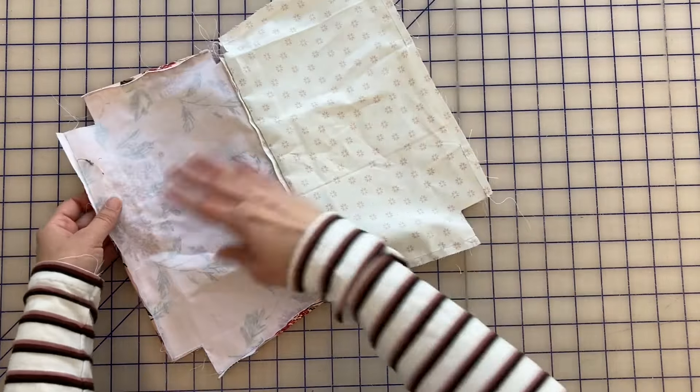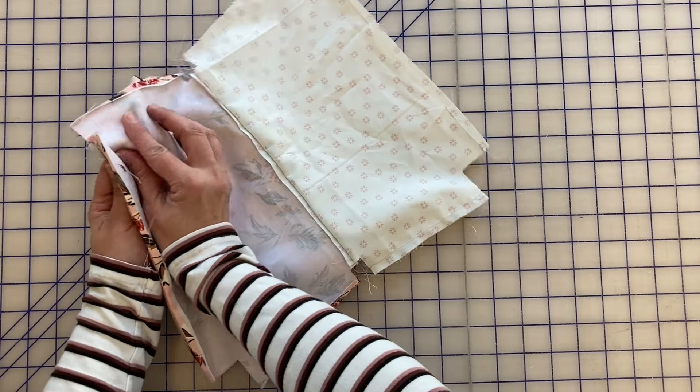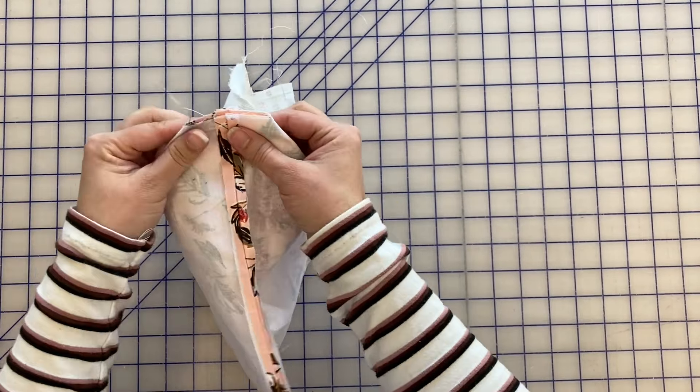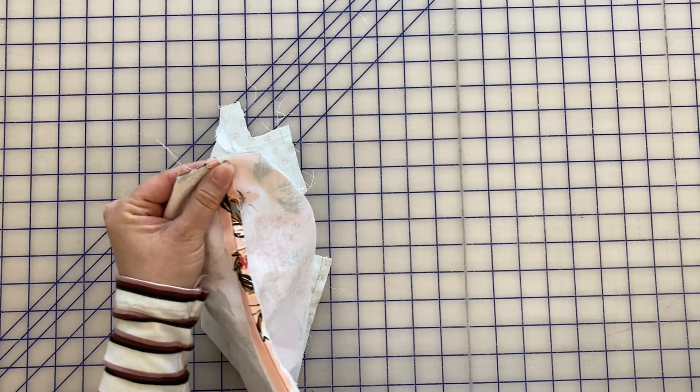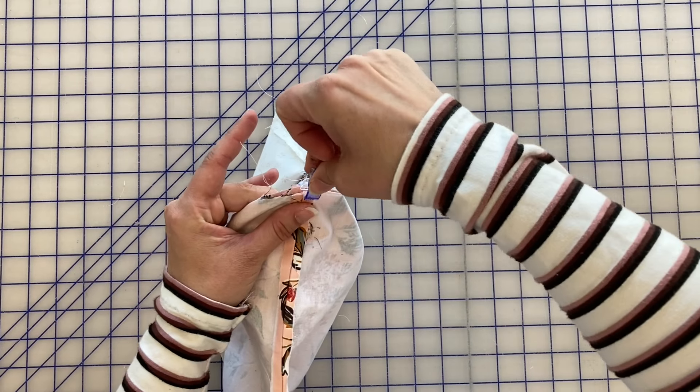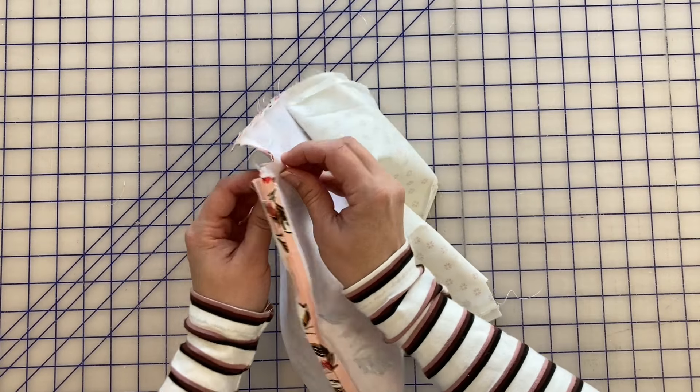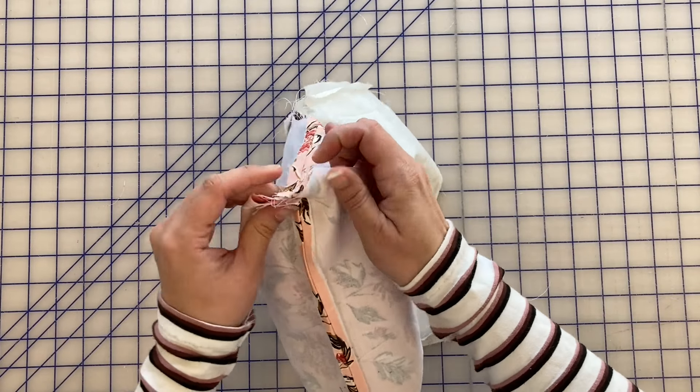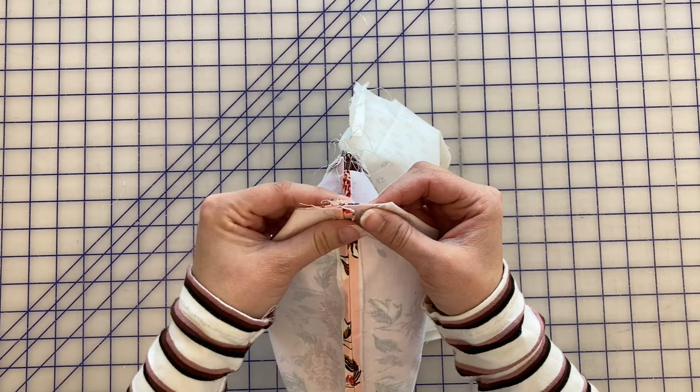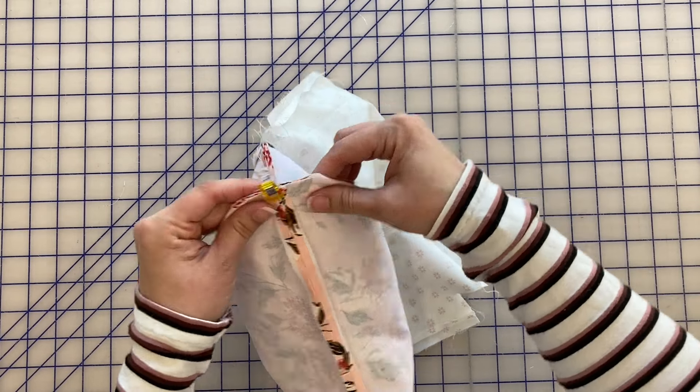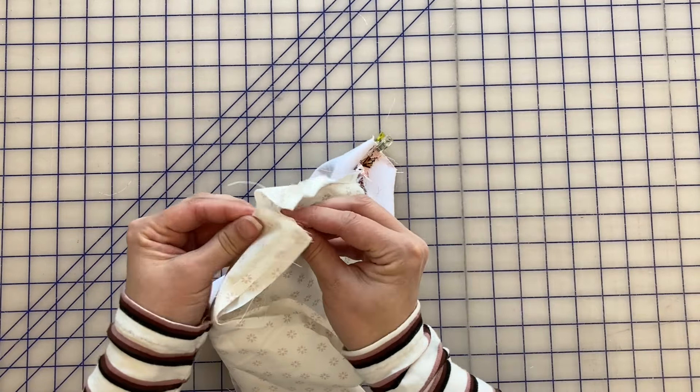Okay, so I've got it all sewn. I've pressed open my seams. Now we need to box our corners. You basically match up your seams on the corners and just clip them in place. And you do that on both the exterior and the lining.